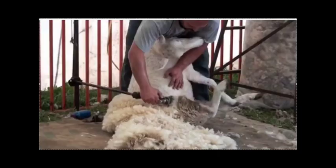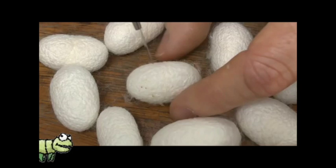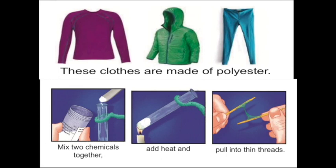Sheep make wool. Silk comes from caterpillar cocoons. People also mix chemicals to make fibers like polyester.